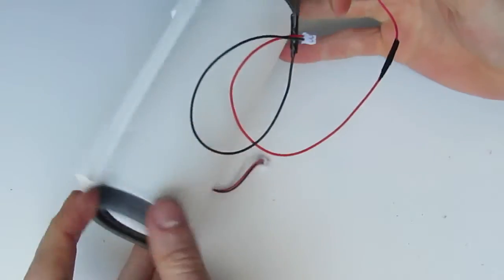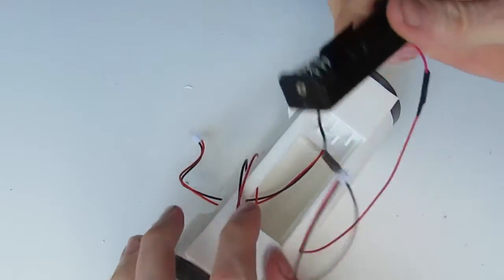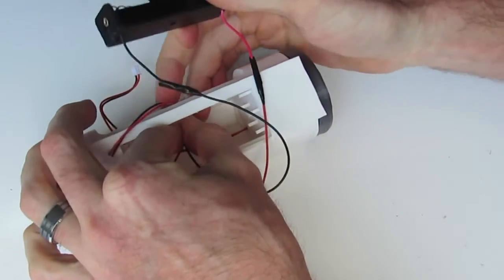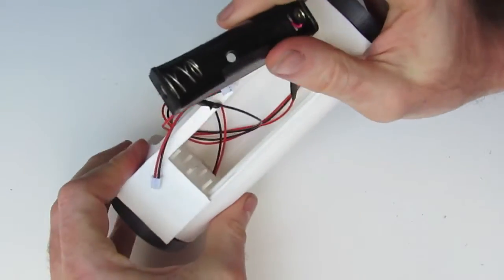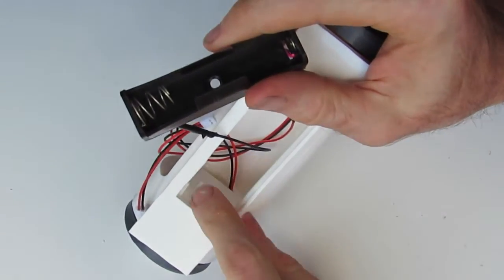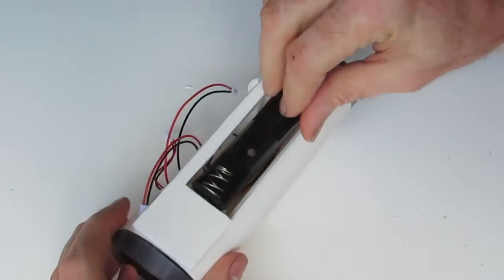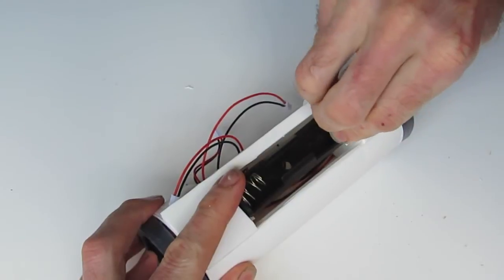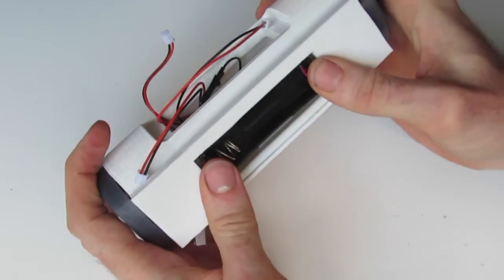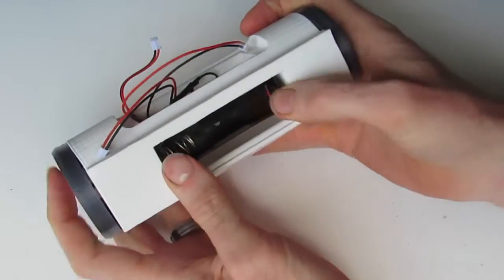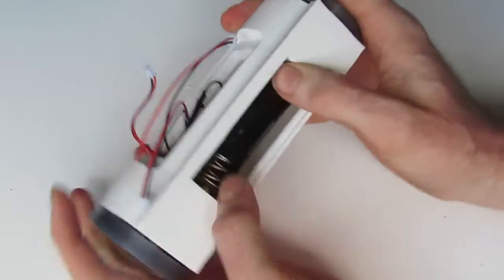Next, we want to just put our battery holder in. Likewise, just feed all these wires through to the front. Our battery holder actually sits on little standoffs here. So just make sure your wires are out of the way. Just gently put that in place and push it down as far as it will go.